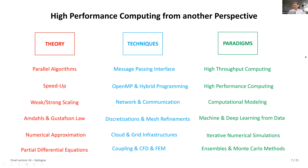On the paradigms side: there will always be a distinction between high-throughput computing — embarrassingly parallel, independent tasks where throughput matters — and high performance computing, where network interactions are central. InfiniBand and high interconnectivity play a key role in HPC. You cannot run numerical weather prediction in a high-throughput computing manner; the terrestrial system with groundwater modeling requires tight interconnections between cores to enable smooth halo exchanges.